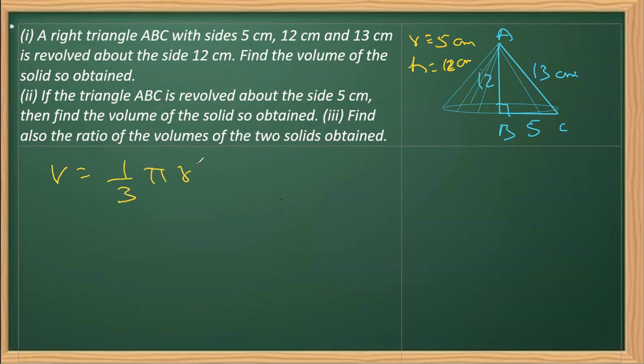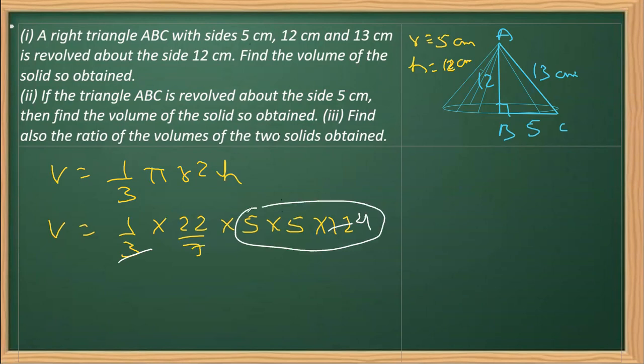Replacing π with 22/7 and the radius is 5, so 5 × 5 multiplied by 12. We can reduce this 3 with this, 4 times. This will give you 100 and this is 22. Therefore, the volume in this case is 2200/7 centimeter cube. That's the volume of case one.